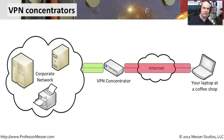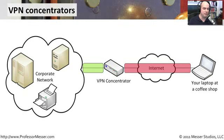The process of encrypting and decrypting data is very, very CPU intensive. So very often these VPN concentrators are very hardware-specific devices, so they can keep up with the speeds that we need to be able to use.